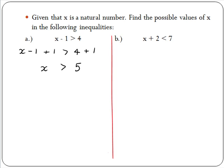This means we can replace x in our original inequality with any natural number greater than 5 and the inequality will remain true. For example, if we take x to be 7, this will satisfy the inequality because 7 minus 1 equals 6, and 6 is greater than 4. However, if we take x to be 4, this will not satisfy the inequality because 4 minus 1 equals 3, and 3 is not greater than 4.